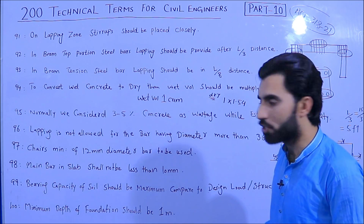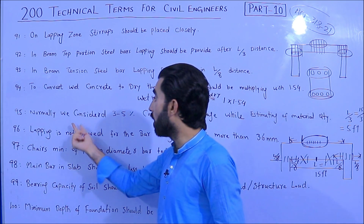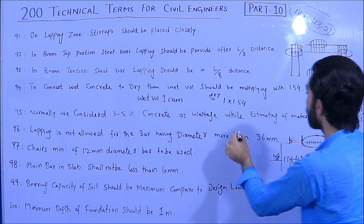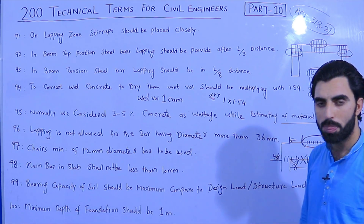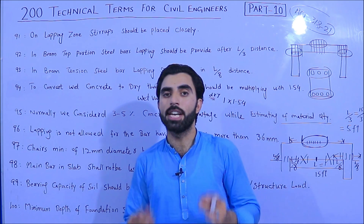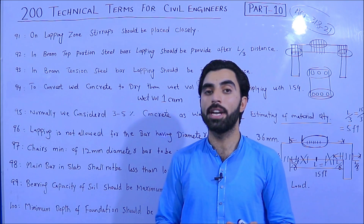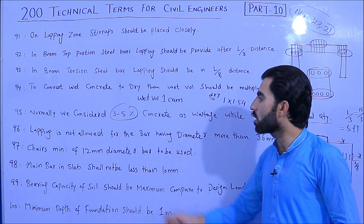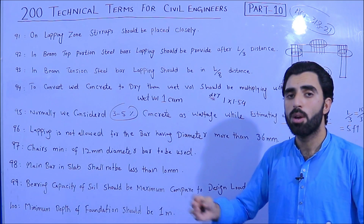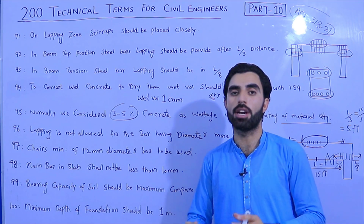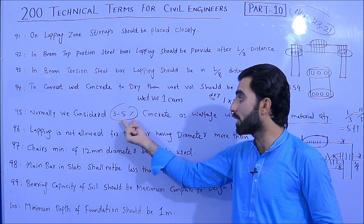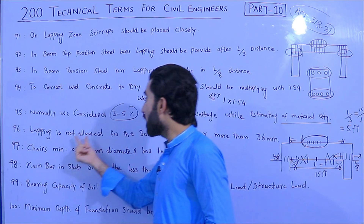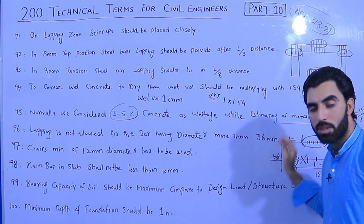Term 95: Normally we consider 3 to 5 percent of concrete as wastage while estimating material quantity. For example, if we require 10 cubic meters of concrete, we add 3 to 5 percent wastage. This accounts for material loss during construction whether for beams, columns, or slabs.